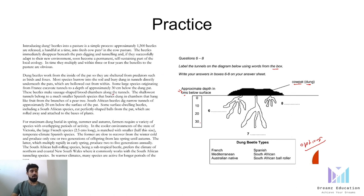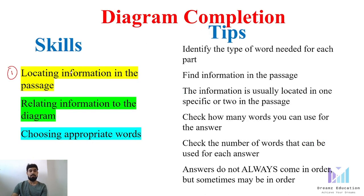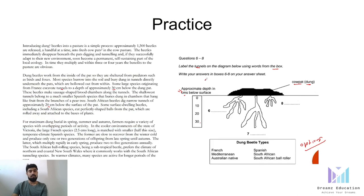That information is present here — I can see something like 30 centimeters and 20 centimeters, and they are talking about some tunnels. Since we are supposed to label the tunnels, I believe all the answers related to this particular diagram will be present in the second paragraph. So that is the first step: locating the information. You select the keywords already present in the diagram, scan the paragraphs for those keywords, and that is the right area you are supposed to read.